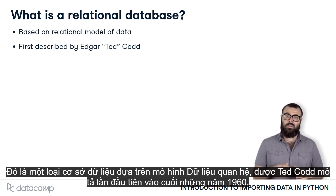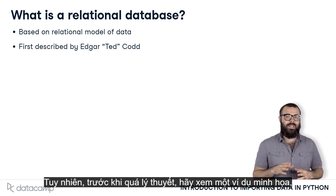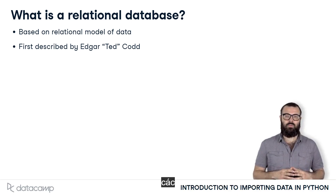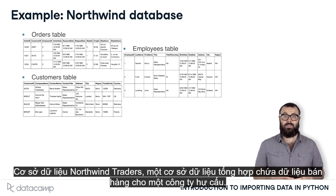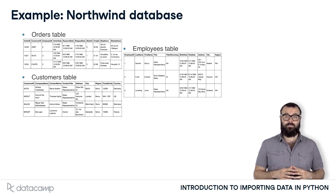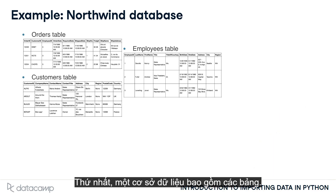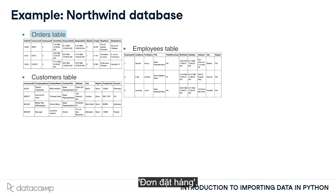The relational model was first described by Ted Codd in the late 1960s. Before getting too theoretical, let's check out an illuminating example: the Northwind Traders database, a synthetic database that contains sales data for a fictitious company. A database consists of tables. Here you can see three tables from the Northwind database: Orders, Customers, and Employees.